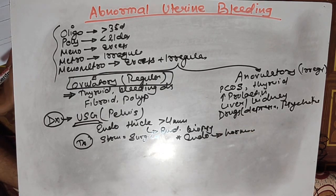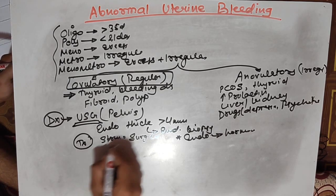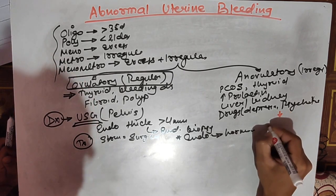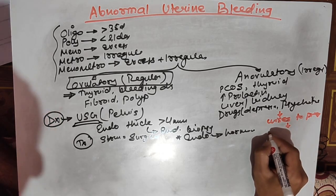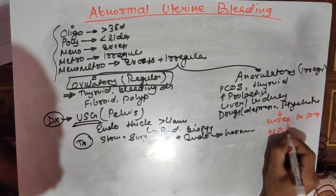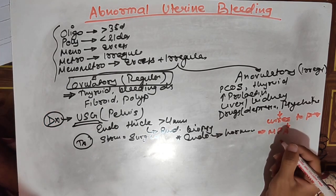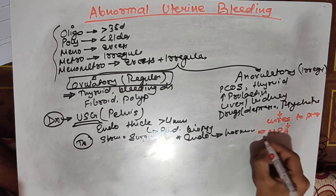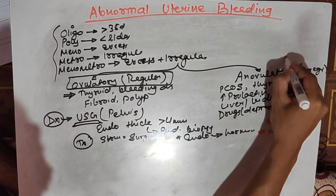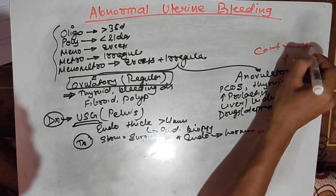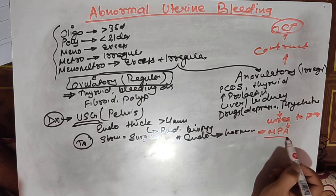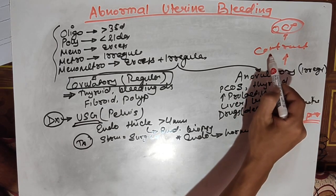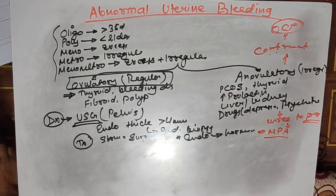For a woman with an anovulatory cycle who wishes for fertility, we prescribe medroxyprogesterone acetate. If the patient does not wish for pregnancy and needs contraception in the case of anovulatory AUB, we can prescribe oral contraceptive pills or a levonorgestrel-containing IUD.